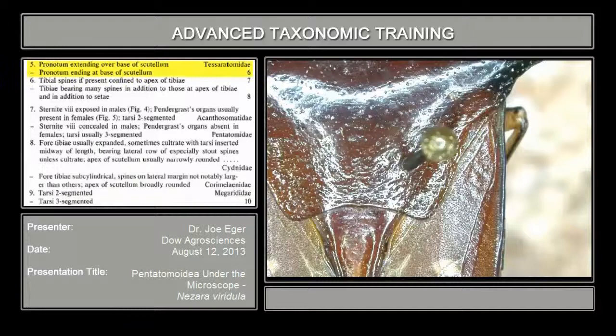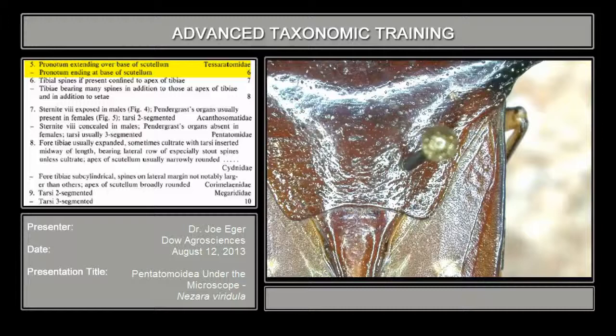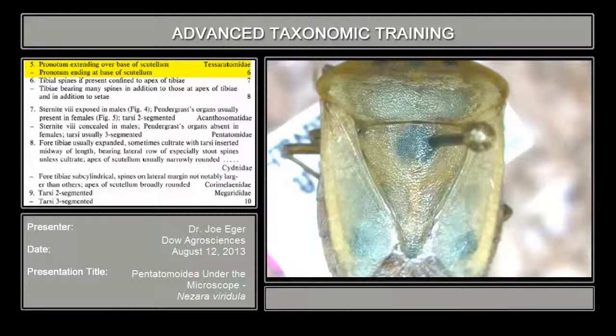Couplet number five: your choices are pronotum extending over the base of the scutellum, which is a tessaratomid, or pronotum ending at the base of the scutellum. This example shows a pronotum that extends over the base of the scutellum — you can see it's pretty obvious; the scutellum is peeking out below, but the pronotum goes way beyond, covering the base of the scutellum. Of course, in our bug the pronotum ends at the base of the scutellum, so it's clearly not a tessaratomid. That takes us to couplet number six.